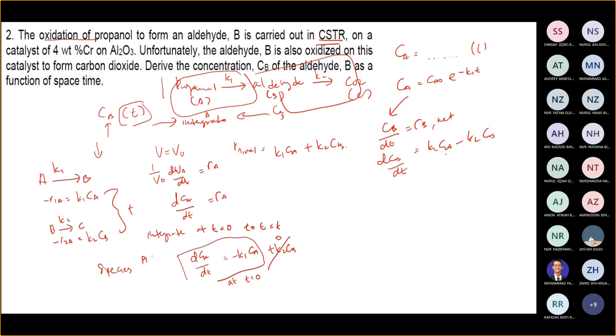So from there you integrate — as shown in the lecture notes. You substitute CA in terms of what you derived and integrate to get CB equal to something.